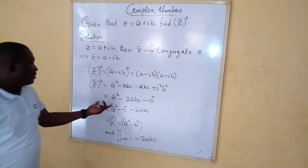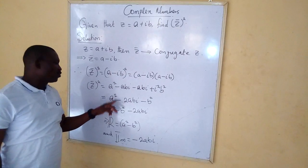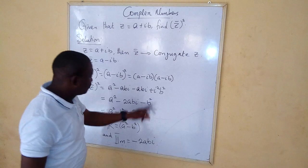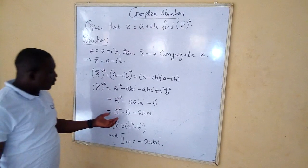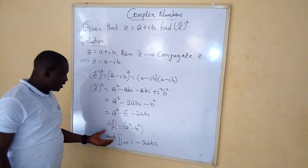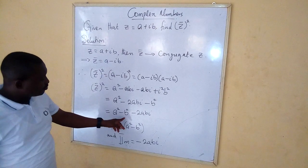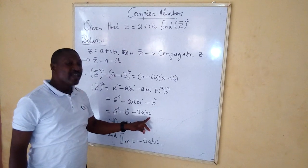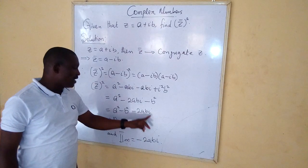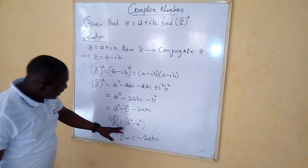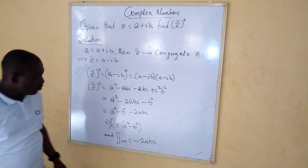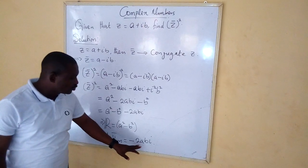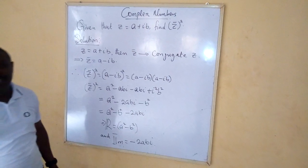Such that the answer now becomes a squared minus 2abi minus b squared. So, separating the real part from the imaginary will have the final answer to be a squared minus b squared minus 2abi, where a squared minus b squared forms the real part and minus 2abi forms the imaginary part.